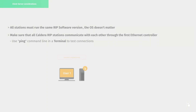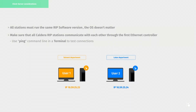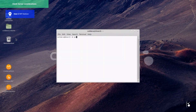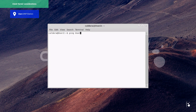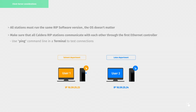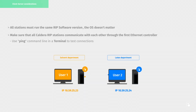Here, for instance, we want to test the connection with the user 1 station. We can either type the name of the computer or its IP address. Here we have a ping response, meaning that we can reach the remote device.